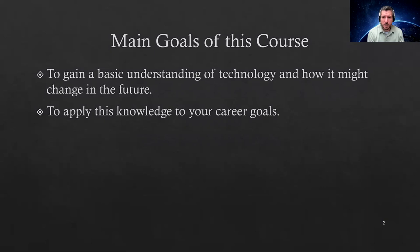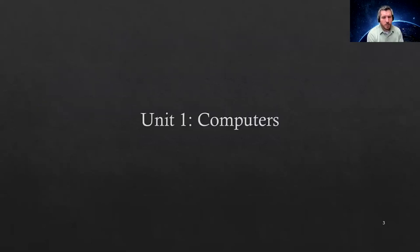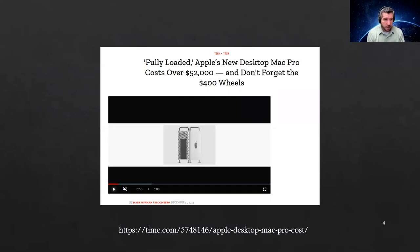This course is broken down into ten units. The first unit covers how a computer works. One of the main basic building blocks of technology is computers of all kinds, whether phones, desktops, laptops, or whatnot. For example, Apple just came out with a desktop Mac Pro that costs over fifty-two thousand dollars — you can even get four-hundred-dollar wheels for it — but we'll be discussing what's inside computers, what makes them tick, and how you might choose a computer for a certain career field or application.